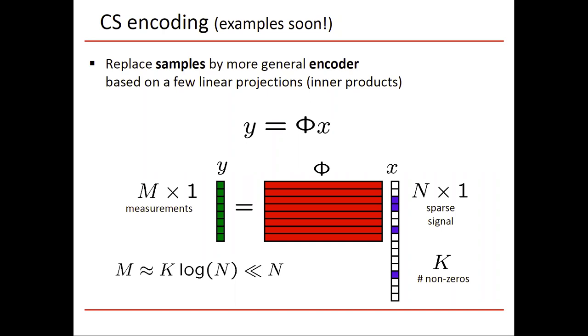On the encoder side, we're replacing samples by a more general encoder based on a small number of linear projections. The signal x can be represented by a column vector of length n, and you have k large coefficients, the blue boxes.